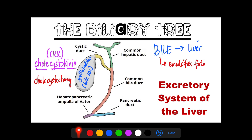Once the bile is excreted from the gallbladder, it will pass through the common bile duct — the last part of the biliary tract. It reaches the gastrointestinal tract and is released into the duodenum, the first part of the intestine where bile is secreted. The bile salts then emulsify the fats in the ileum, where absorption of fats and bile salts occurs, and then the bile salts are reabsorbed back to the liver to be reused.